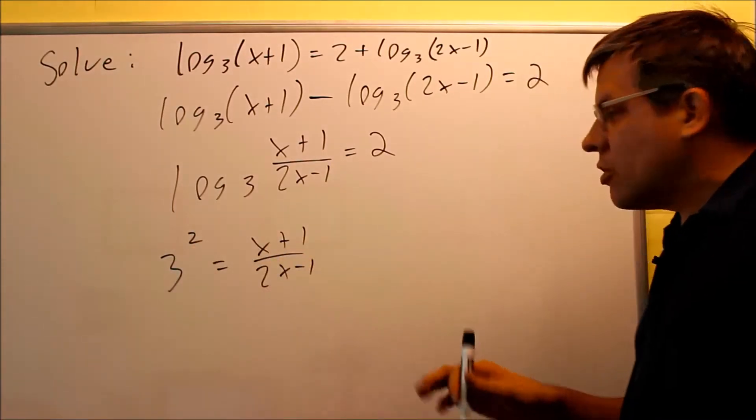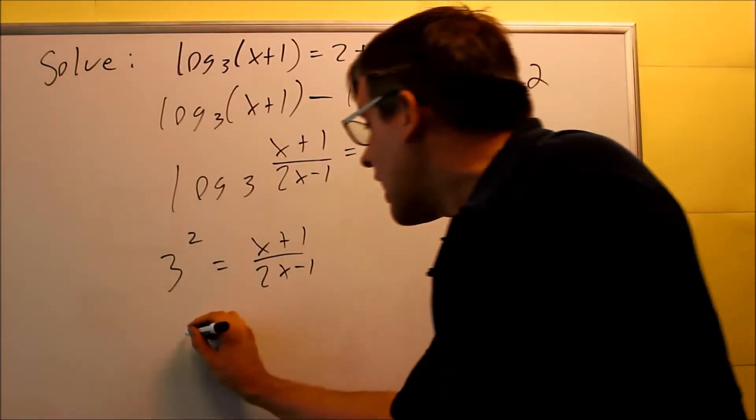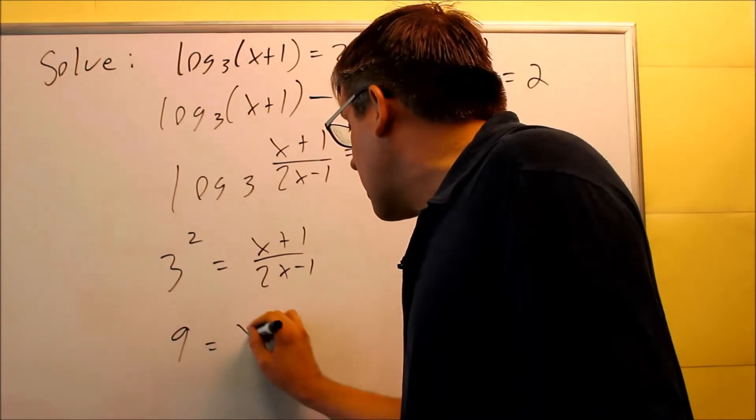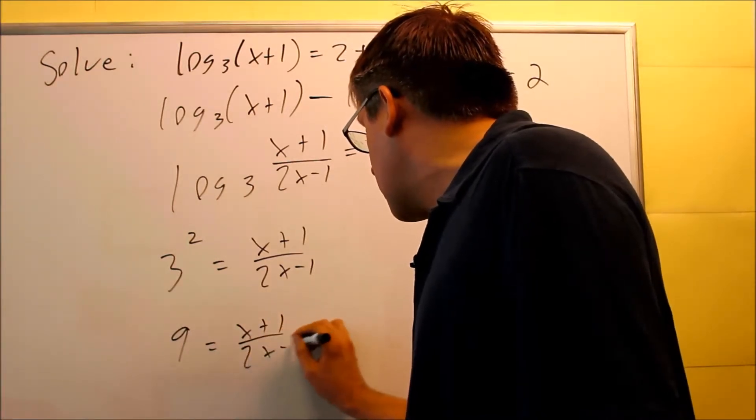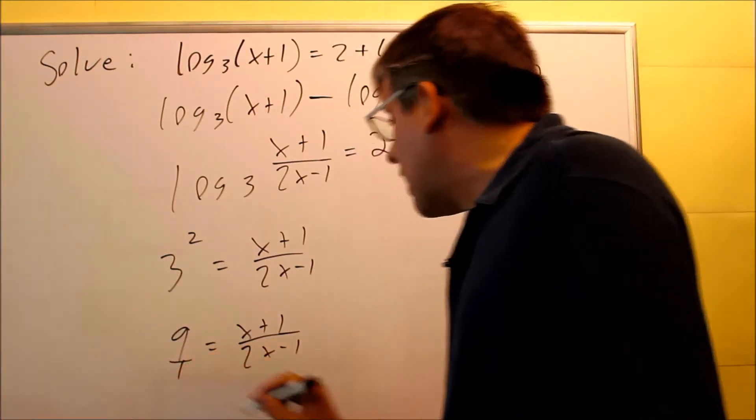Now this, 3 squared, make sure you don't accidentally put 6. It's going to be 9. 3 squared is 9. That's x plus 1 over 2x minus 1. And we have a 1 on the bottom there.